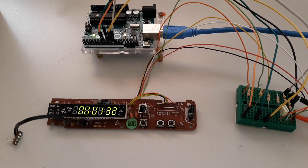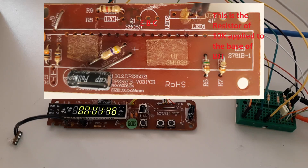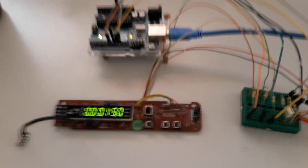The panel has a blue LED controlled by a transistor, which I control through pin 10 of the Arduino. The base of the transistor already has a 10k resistor to protect the Arduino port.